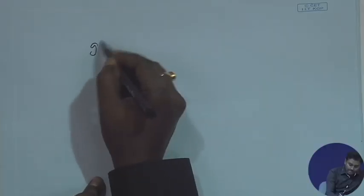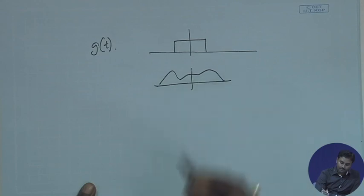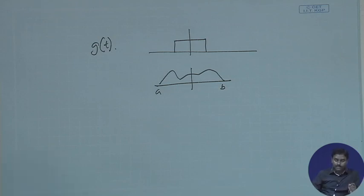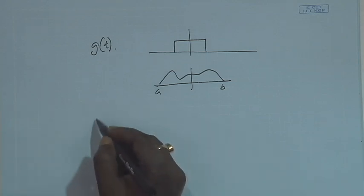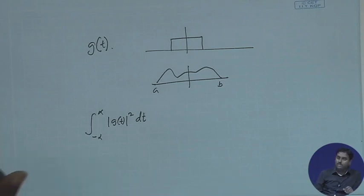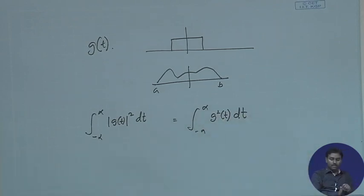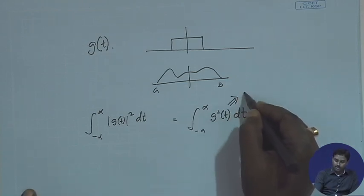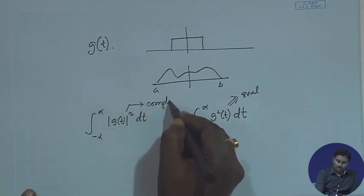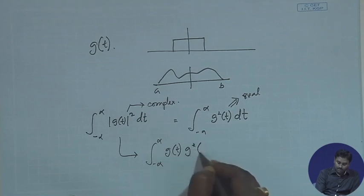Let us consider a signal g(t) which is time bounded — it might be of any nature, defined between some finite amount of time. I wish to evaluate the energy of this signal. The energy is defined as the integral of |g(t)|² dt. If it is a real signal, it is just the integral of g²(t) dt. We can also write |g(t)|² as g(t)·g*(t) dt.